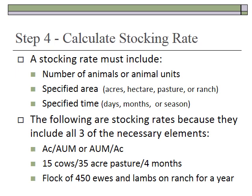The last step is to simply calculate the stocking rate — that means writing the number of animals on the amount of land for the specified period in terms that describe a stocking rate. You could express it as acres per AUM or AUMs per acre. You can also simply say 15 cows on a 35-acre pasture for four months, or a flock of 450 ewes and their lambs on the ranch for the whole year — these are appropriate stocking rates provided you know the ranch size.